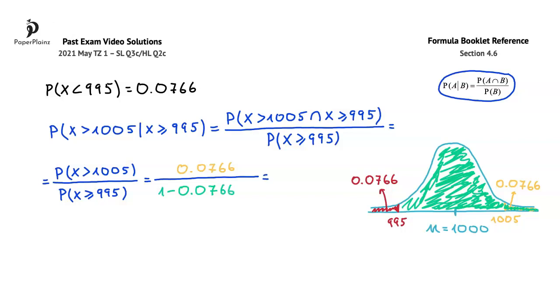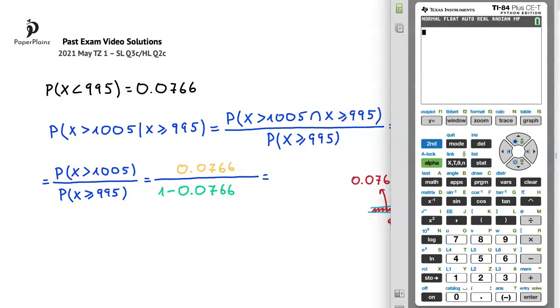In the next step, we just have to use our calculator to get the probability that we are looking for. I will first create a fraction by pressing alpha y and enter, and then type in the numerator, 0.0766, followed by the denominator, 1 minus 0.0766.